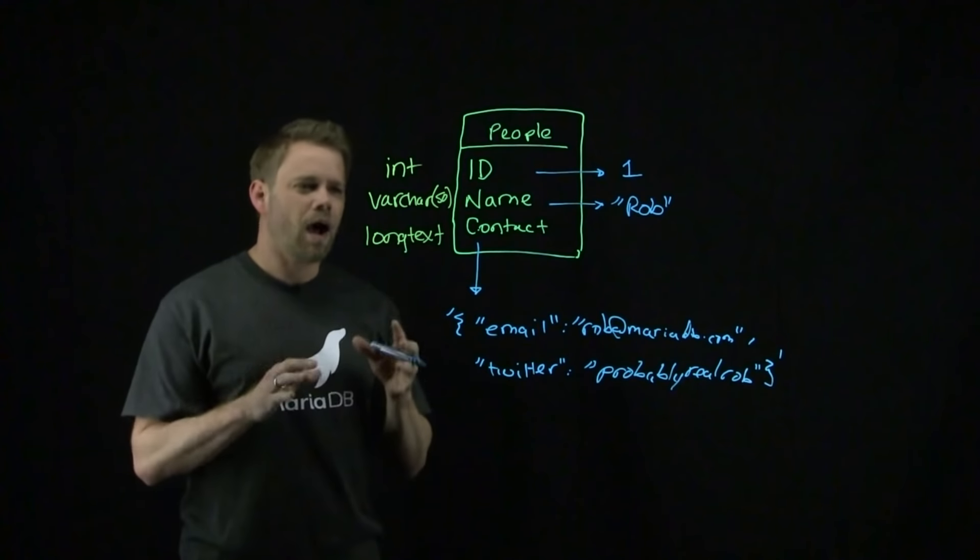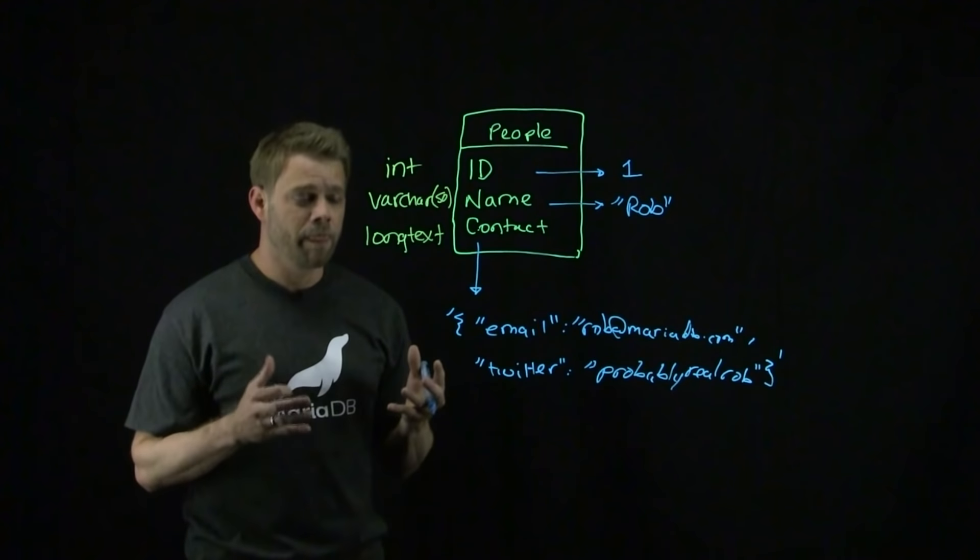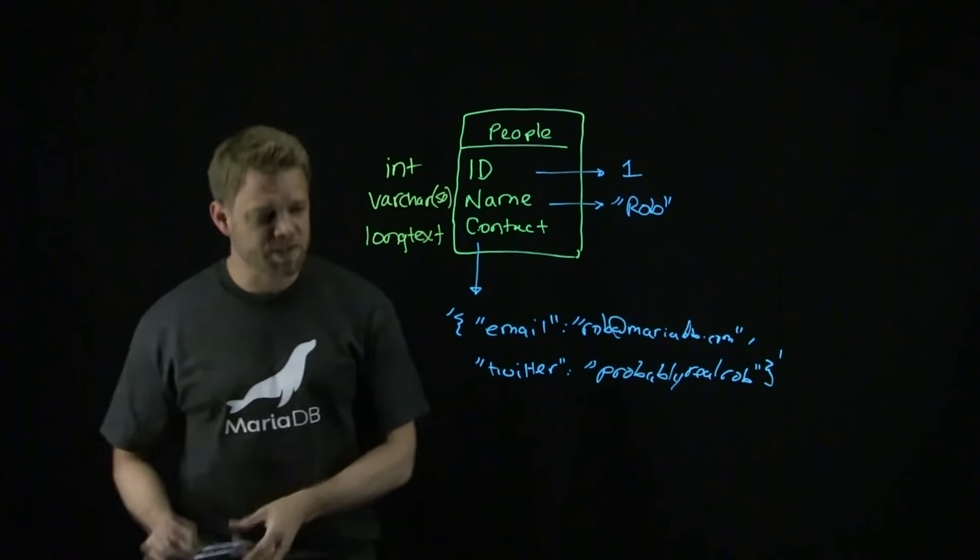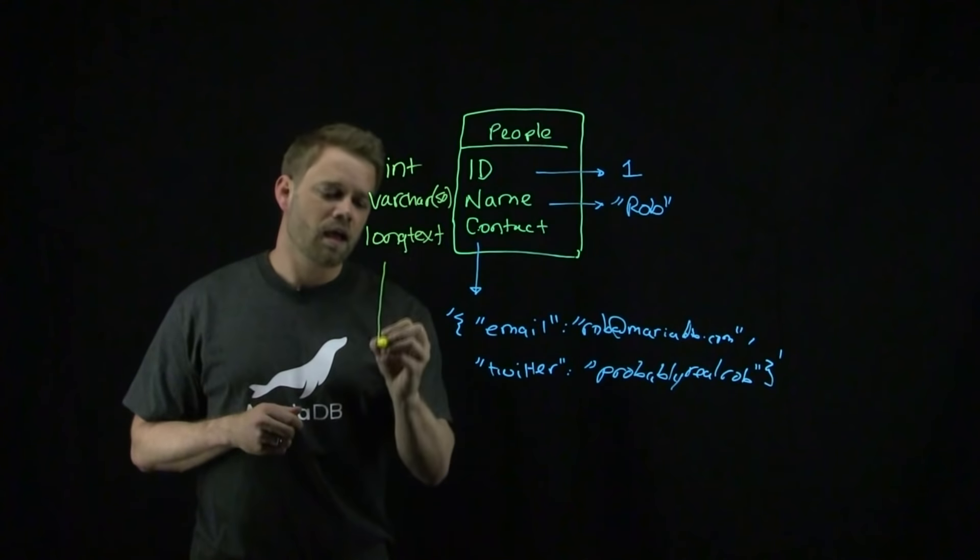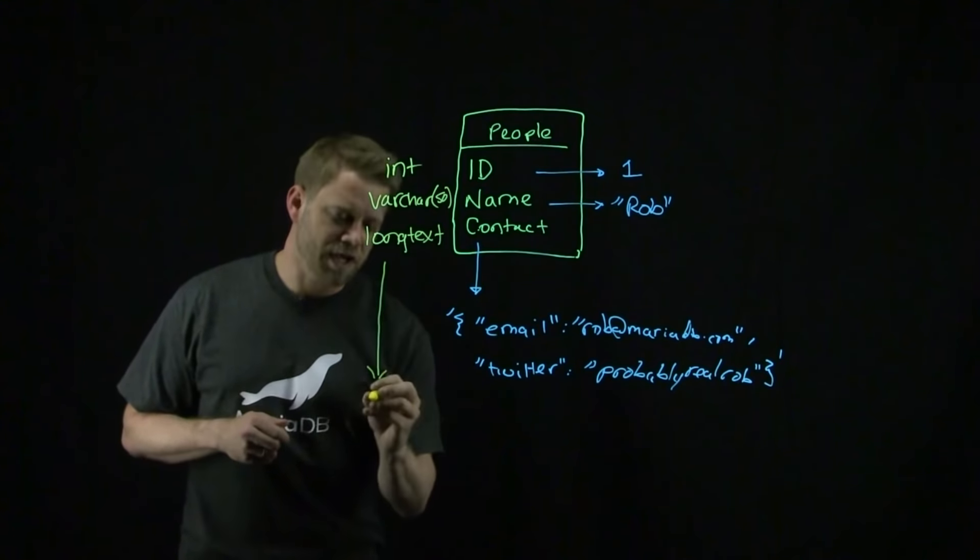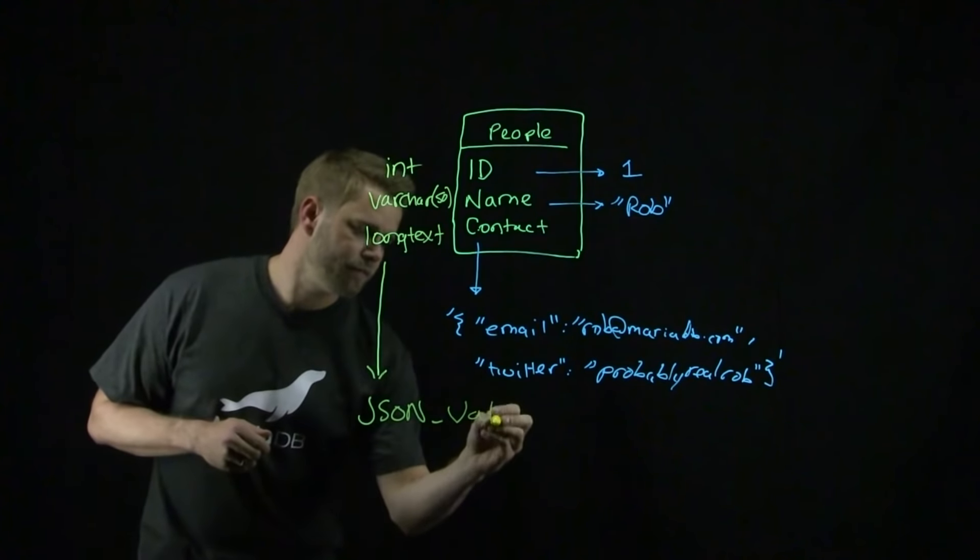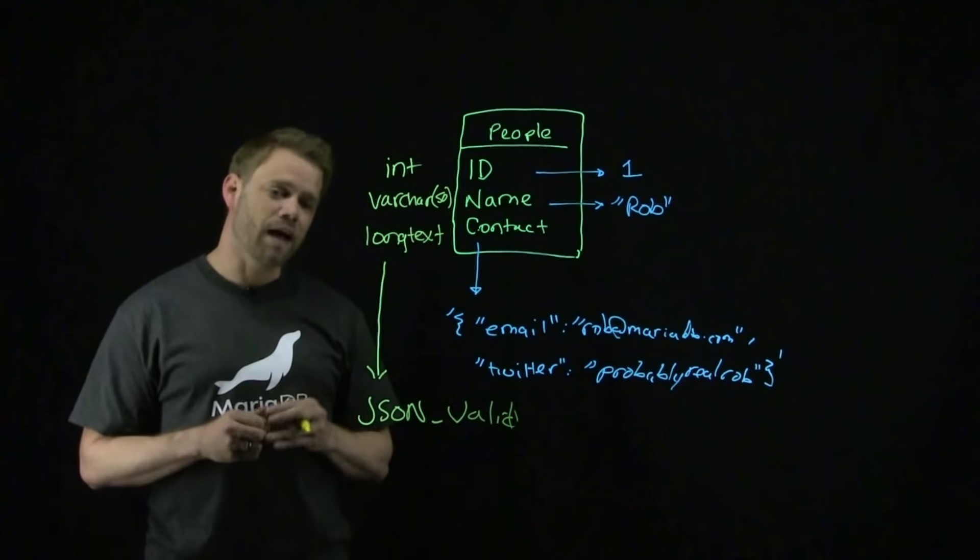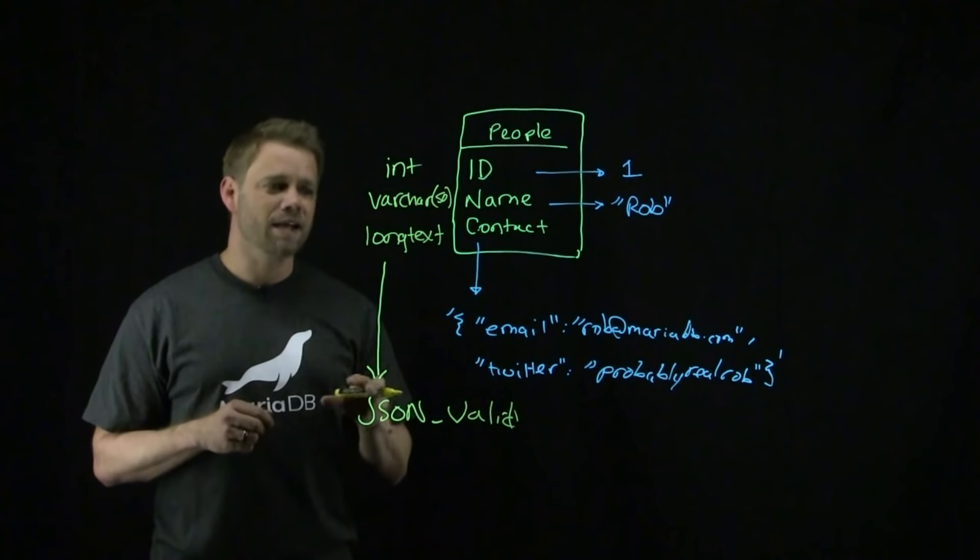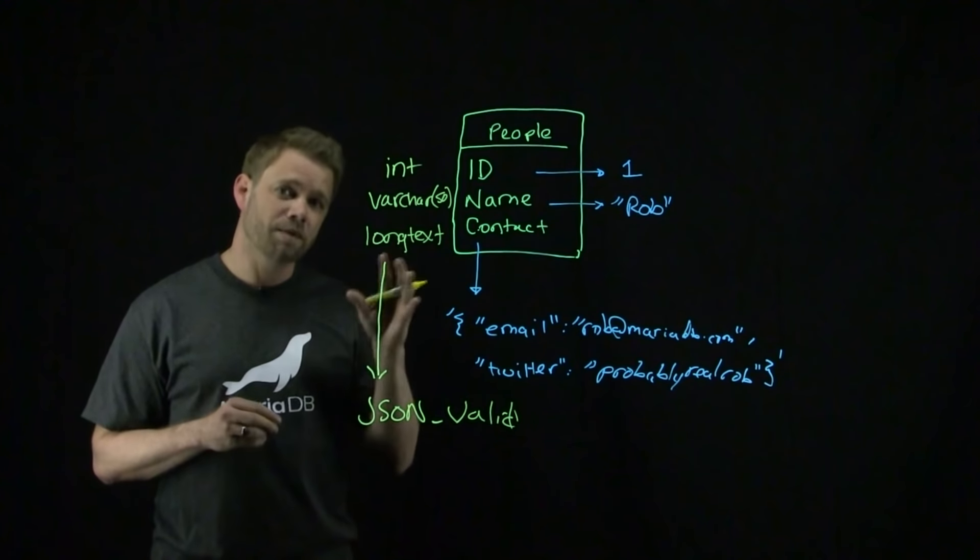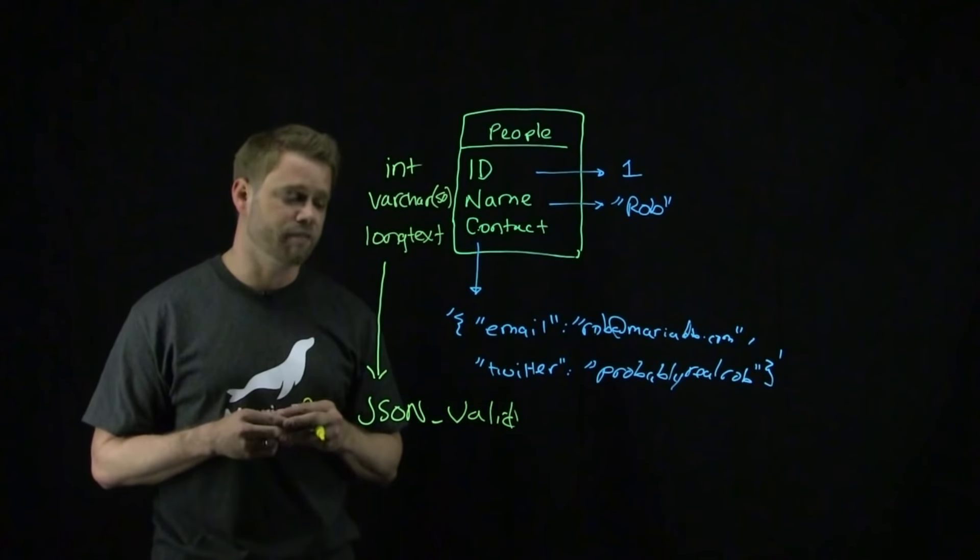You may be wondering, how exactly does the table within MariaDB know that you're storing JSON information? This all comes down to something called JSON_valid. JSON_valid is a predefined function that exists within MariaDB that's going to be executed whenever you insert or update information inside of your people table or any table that contains JSON information.